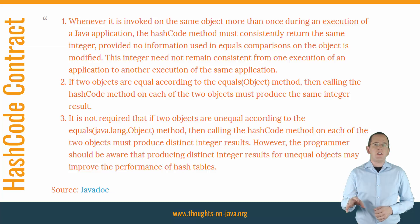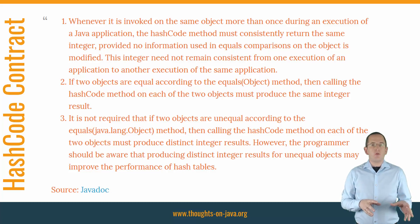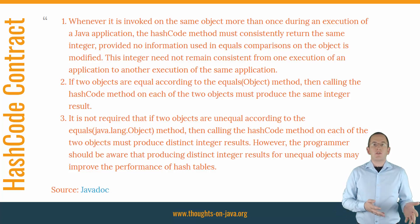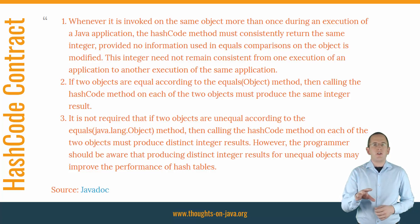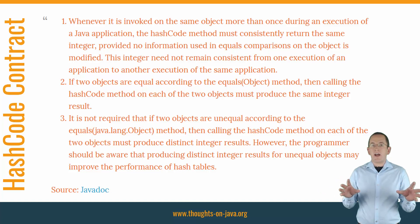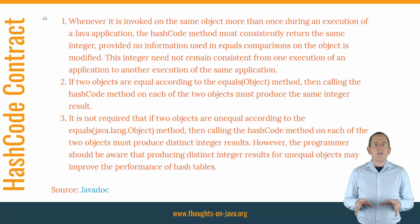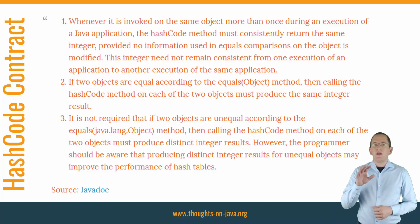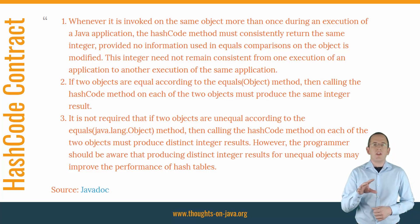The hashcode contract is a little bit easier to implement. Whenever it is invoked on the same object more than once during an execution of a Java application, the hashcode method must consistently return the same integer, provided no information used in equals comparisons on the object is modified. This integer need not remain consistent from one execution of an application to another. If two objects are equal according to the equals method, then calling the hashcode method on each of the two objects must produce the same integer result. It is not required that unequal objects produce distinct integer results, however producing distinct results for unequal objects may improve the performance of hash tables. The important part is that the hashcode has to be consistent with the result of the equals method.